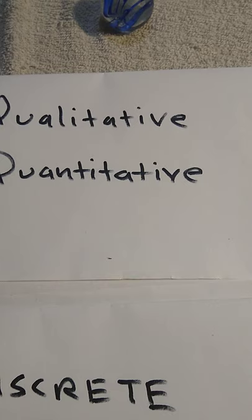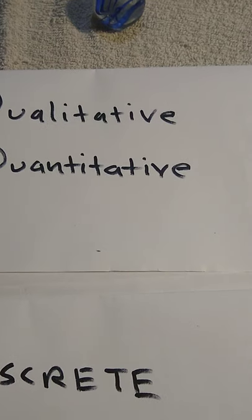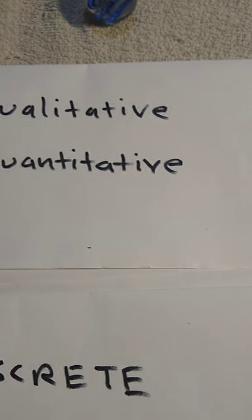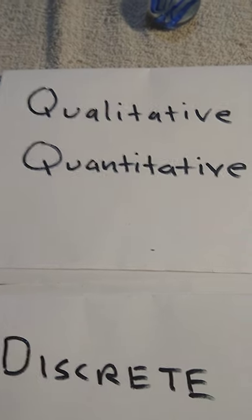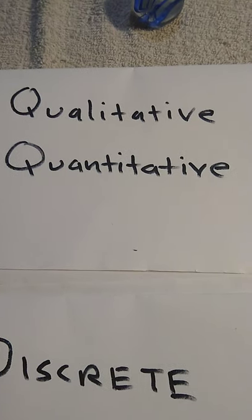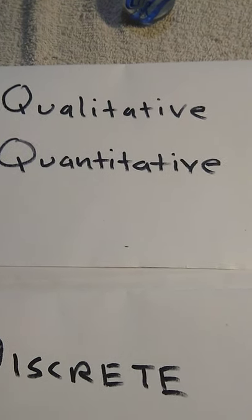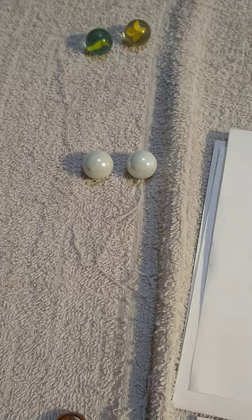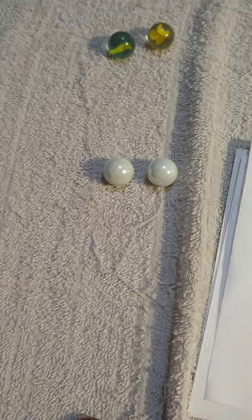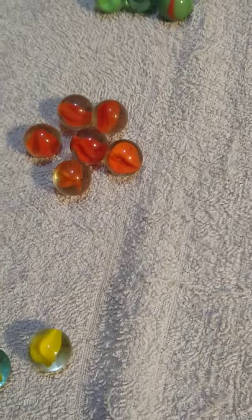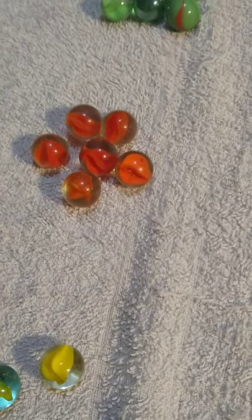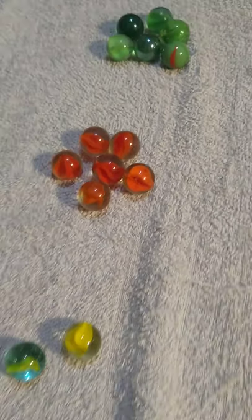Quantitative data refers to numerical measurements. Quantitative data can be discrete or continuous — those terms will be explained in just a moment — but quantitative refers to numbers, such as there are two white marbles. The two is quantitative. The number of marbles in the orange set is six. Quantitative refers to numbers.